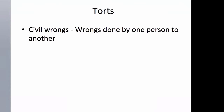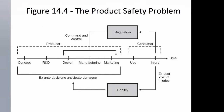Torts are civil wrongs — wrongs done by one person to another. The law of torts is common law that evolved through decisions made by judges in cases brought by private plaintiffs. The basic elements of a tort case are an injury, an action that caused the injury, and a breach of duty owed to the injured party. One of the most common torts is product safety. There's a line showing concept, research and development, design, manufacturing, marketing, use of the product — and then the injury occurs. This happens within the domain of the producer and the domain of the consumer, and at the point of injury, regulation is often put in place to ensure it doesn't happen again.